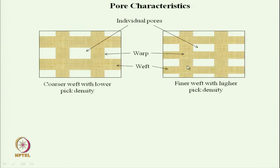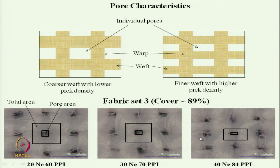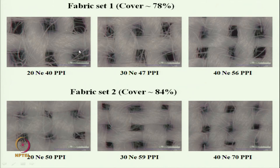The larger pore, when the pick density is increased, is divided into many smaller pores. For a fabric set with 89% cover factor: 20 NE at 60 ppi has fewer but larger pores, 30 NE at 70 ppi has intermediate pore size, and 40 NE at 84 ppi has more pores with smaller pore size. The chances of flattening and covering of pores are greater with more, smaller pores — so UPF is higher for 40s count compared to 20s count.